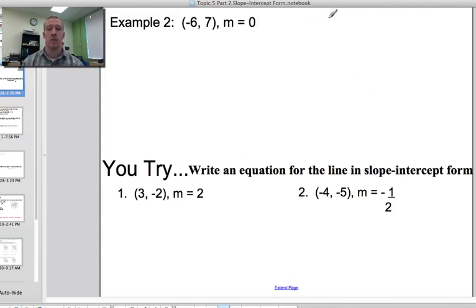If our slope is 0, well, right away we know we have a horizontal line. So therefore, our equation is just y equals the y-coordinate. y equals 7.